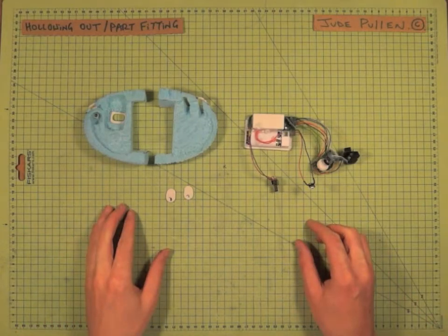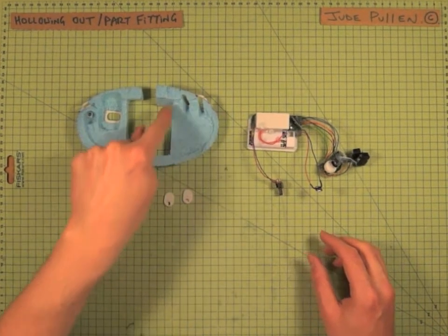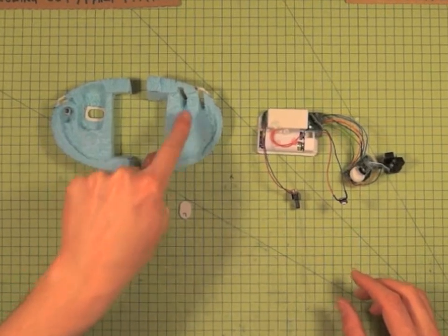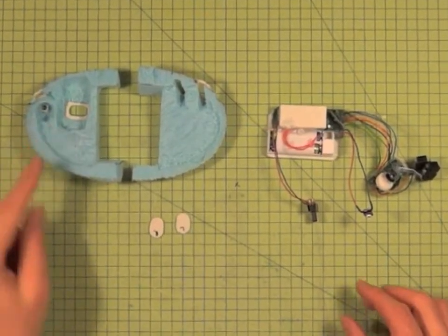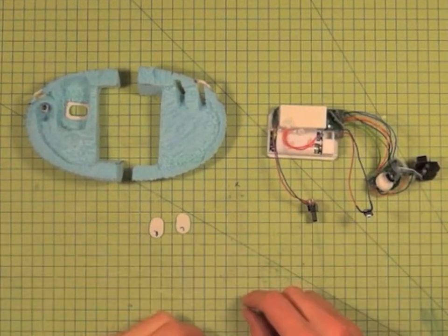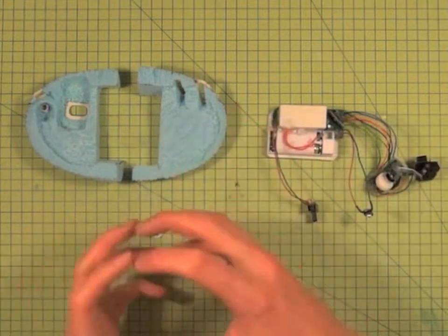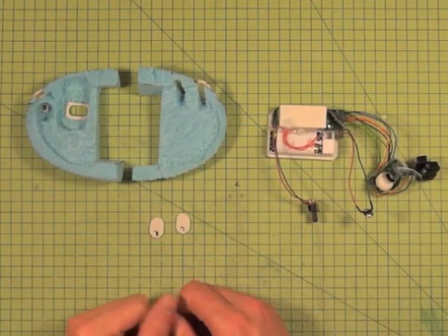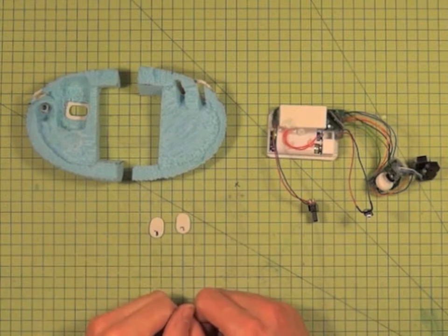Okay, so now that we've hollowed out, you can see that I've taken a little cavity in either side, which is just so that when we do push things together, the wires have an area to collapse and crush up neatly without pushing the model apart.